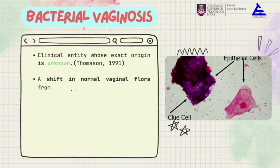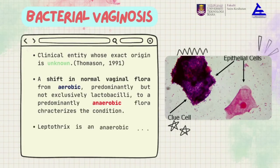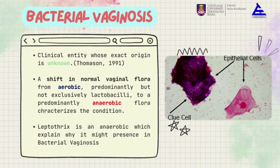For bacterial vaginosis, it is a clinical entity whose exact origin is unknown. Bacterial vaginosis can be defined as a shift in normal vaginal flora from aerobic, predominantly lactobacilli, to a predominantly anaerobic flora. The anaerobic species include Aneurococcus, Atopobium, Gardnerella, and Leptothricia. This shift raises vaginal pH above 4.5 and leads to bacterial vaginosis, which is also a favorable growth pH for Leptothrix. Additionally, Leptothrix is anaerobic, which explains why it may be present in bacterial vaginosis.